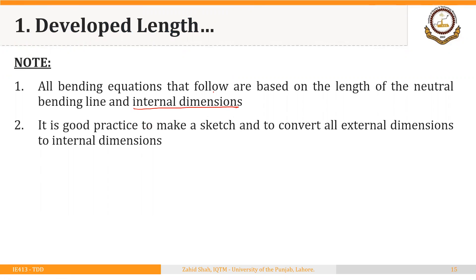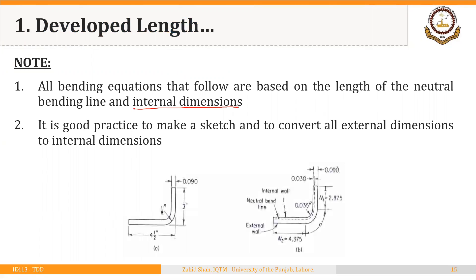It is good practice to make a sketch and convert all external dimensions to internal dimensions. For example, if we are given the outer radius, we have to convert it into inner radius, because the equations are based on inner radius. The starting blank is something flat, and once this blank is bent we can make a shape with a radius and a bend angle. If the starting length of the blank is L, it needs to have a small portion — called small l — that once bent will be converted to radius r.